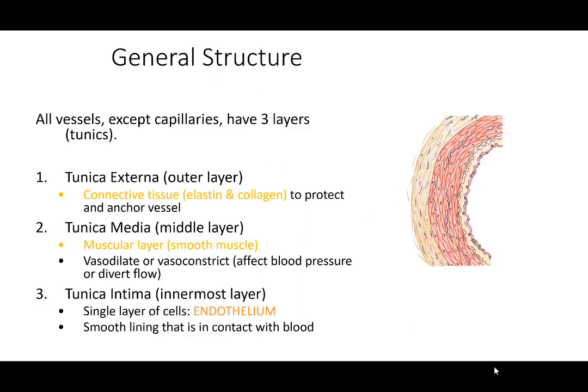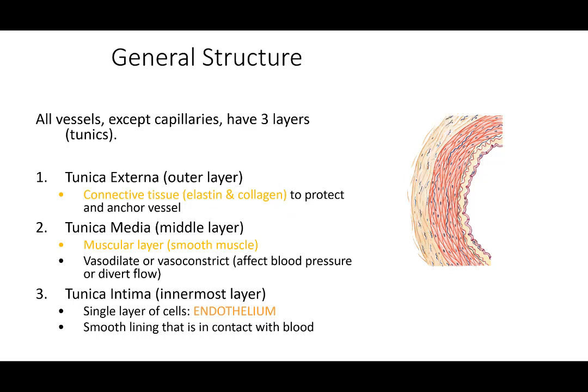The general structure of a blood vessel has three layers. There is the tunica externa, also known as tunica adventitia — the outer connective tissue layer. It has both elastin and collagen. The elastin allows it to stretch and distend when there's high pressure from a new bolus of blood ejected from the heart. Collagen helps keep it strong and tethered to nearby tissue.